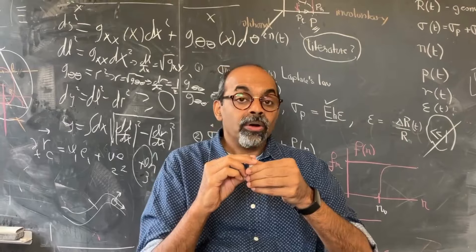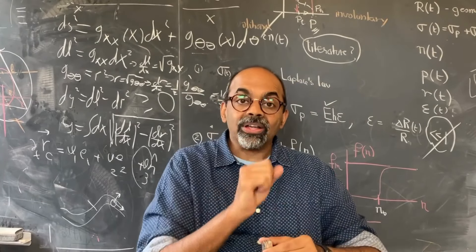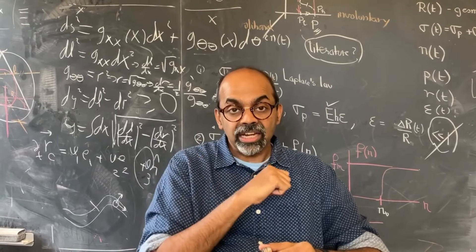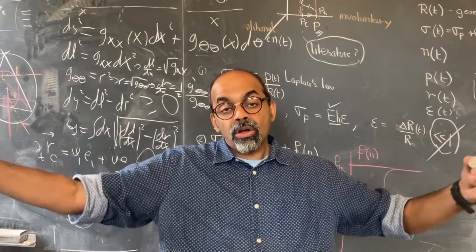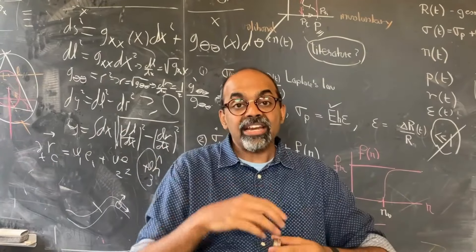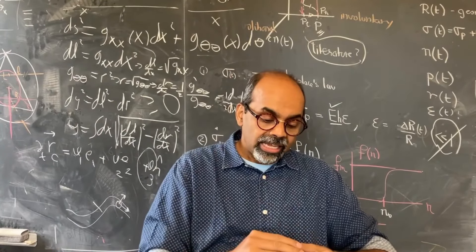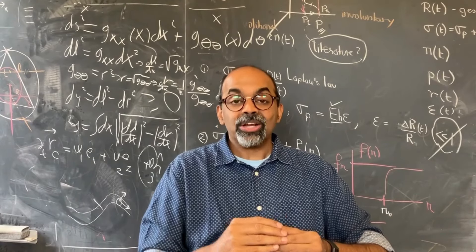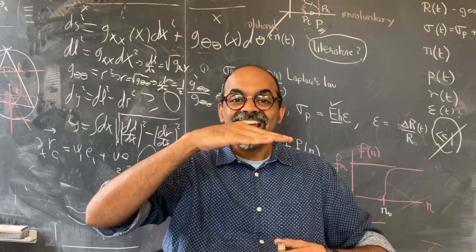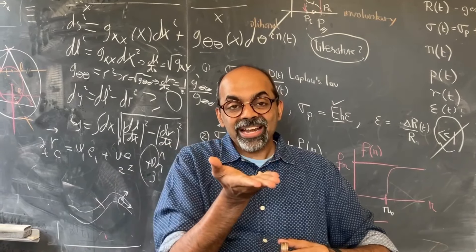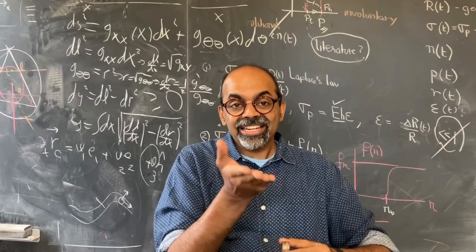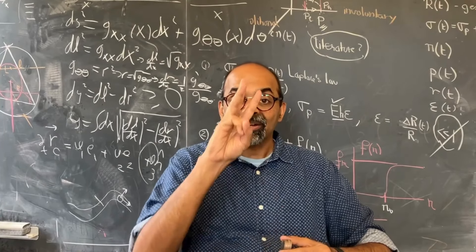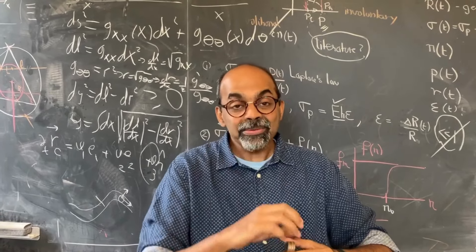So in one limit, with a very thin coin, it always landed on heads or tails. In the other limit, an infinitely long coin, it never landed on heads or tails. So then you can ask: is it possible to create a coin so that one third of the time it lands heads, one third of the time tails, and one third on the side — so you can use it to determine a bet with three people, not two. You can use mathematics to answer the question.